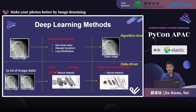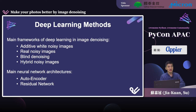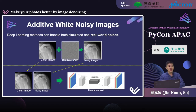Deep learning is a powerful tool for computer vision. It can learn the image features and noise properties from a lot of data, so it is possible to break the barriers of the noise distribution assumptions. Deep learning methods can handle different kinds of noises, and there are two main model designs. Today, we want to focus on additive white noise images and residual networks.